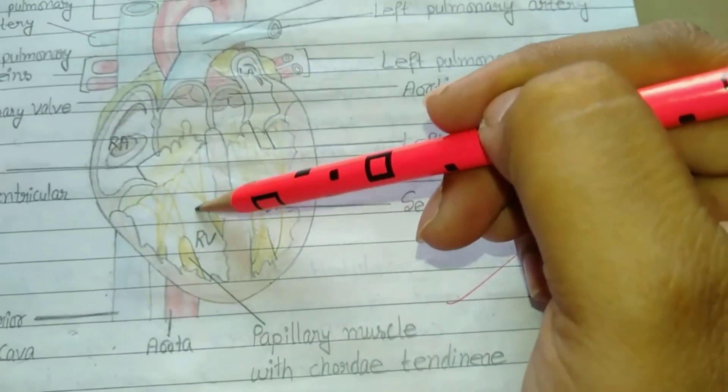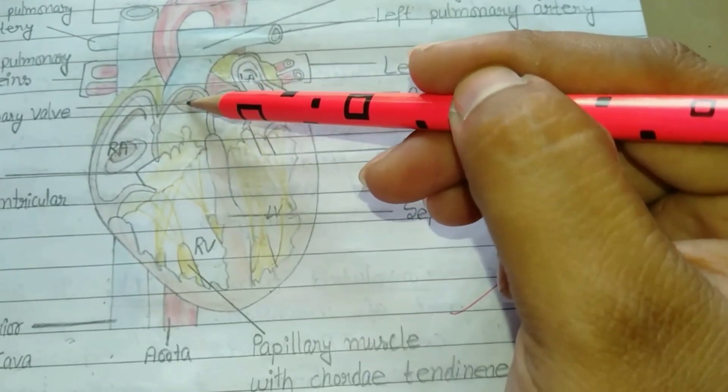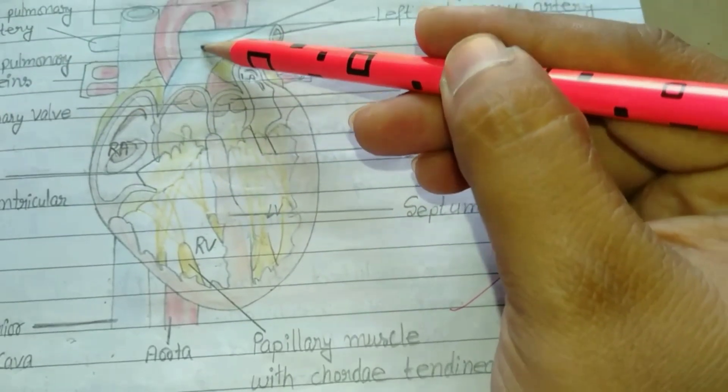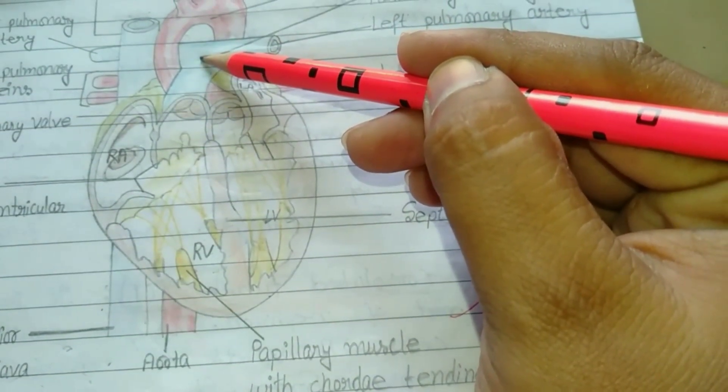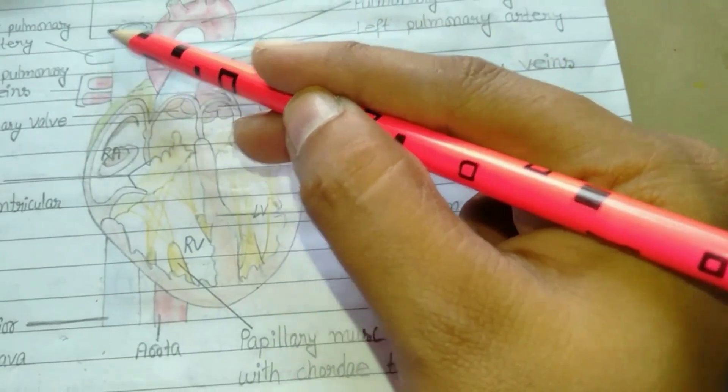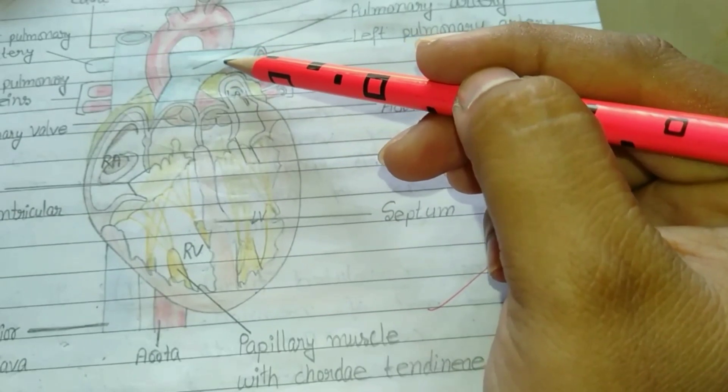Moving ahead, these are pulmonary valves and these valves get opened. Then the deoxygenated blood flows to the pulmonary artery. This is right pulmonary artery, this is left pulmonary artery, and from here the blood goes to the lungs for filtration.